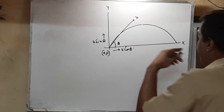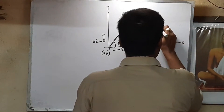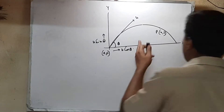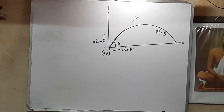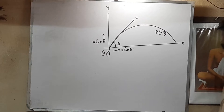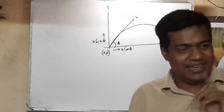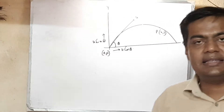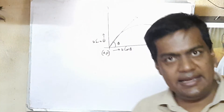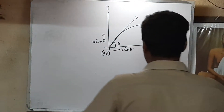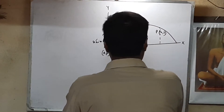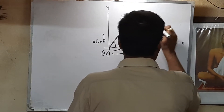Now, let after t seconds the body reach point P. Let the coordinates of point P — which is a point on the trajectory of the projectile — be (x, y). So in t seconds, the horizontal displacement of the projectile is x, while the vertical displacement of the projectile is y.